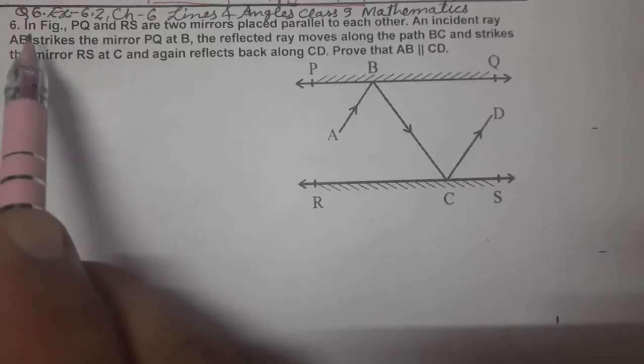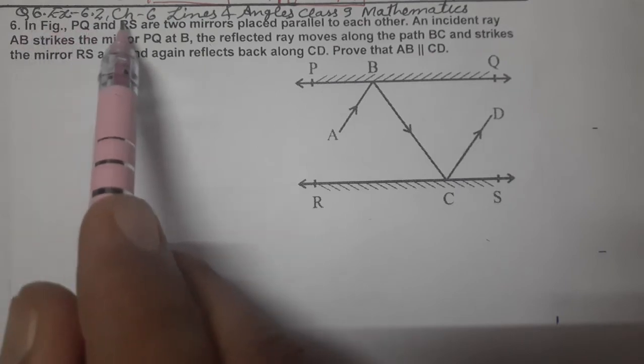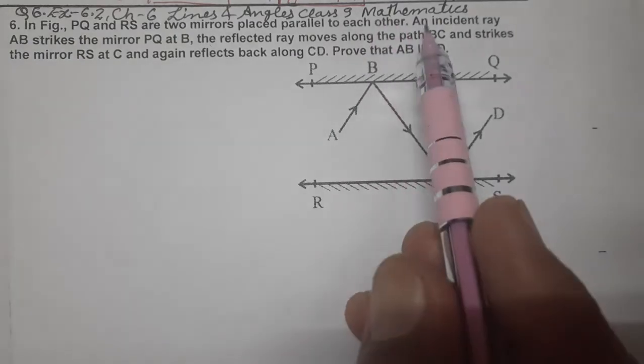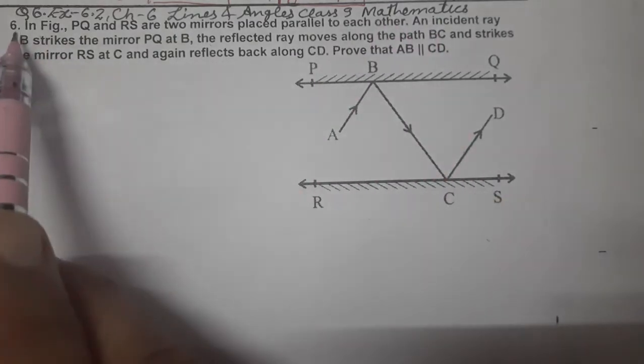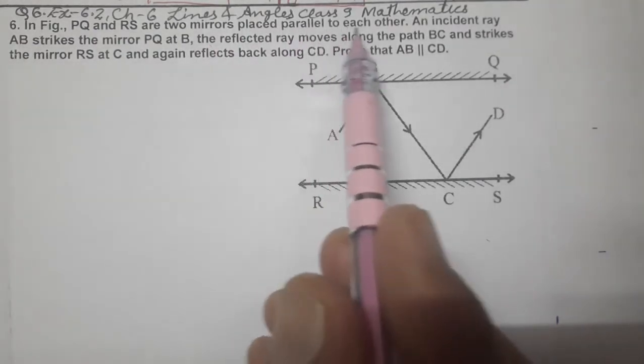Hello students, today we are going to do question number 6 of exercise 6.2, chapter 6 Lines and Angles, class 9 mathematics. In figure PQ and RS are two mirrors placed parallel to each other.